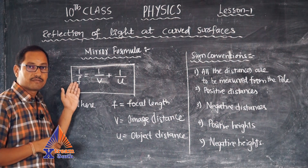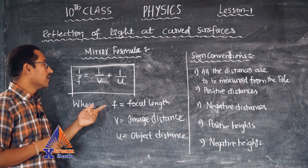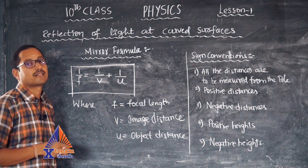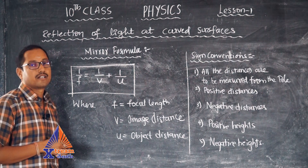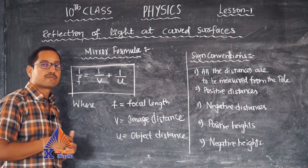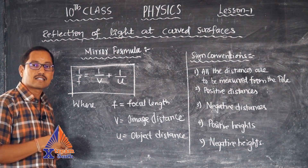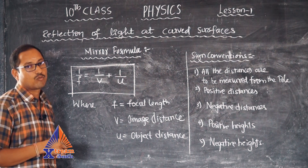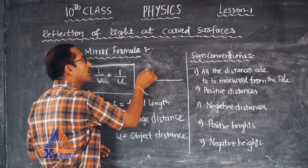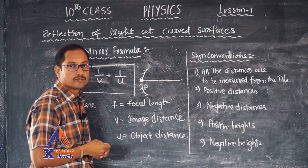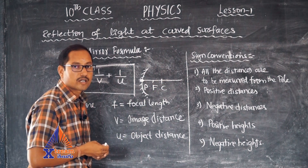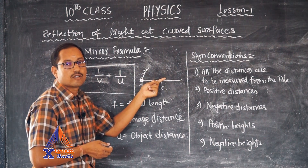f stands for focal length, which is the distance between the pole and the focus. v stands for image distance, which is the distance between the pole and the image. u stands for object distance, which is the distance between the pole and the object. Let us understand these three terms using a diagram. In a concave mirror, the optical center is called the pole. Somewhere along the axis we have the focus, and then the center of curvature, such that the distance between pole and focus equals the distance between focus and center of curvature.